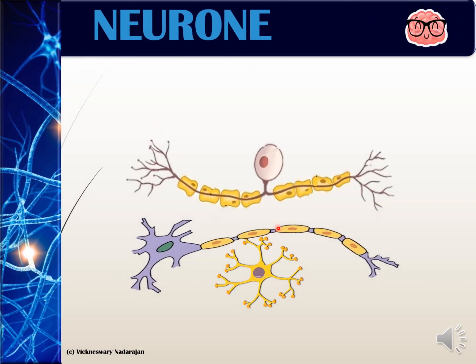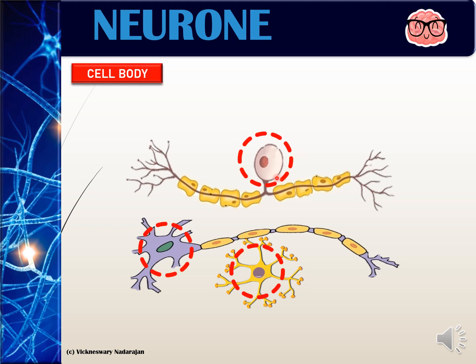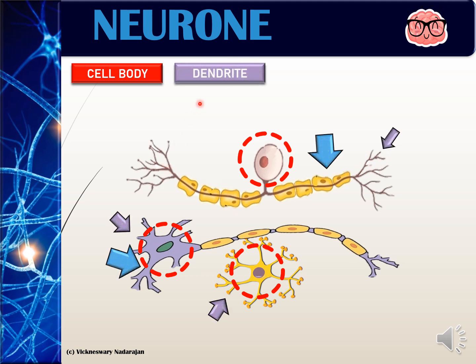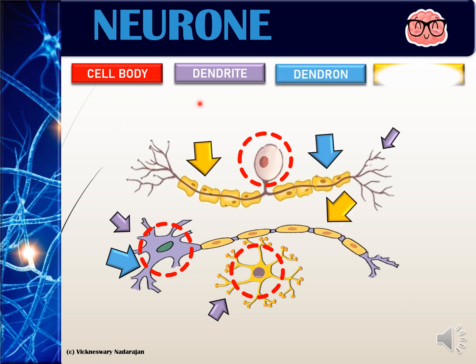Let's look at the detailed structure of a neuron. Although nerve cells look different, they have the same parts, starting with the cell body. The cell body is where you find the nucleus, the cytoplasm, the mitochondria, and the ribosome. The rest of the neuron is divided into either dendrites, dendrons, or axon.